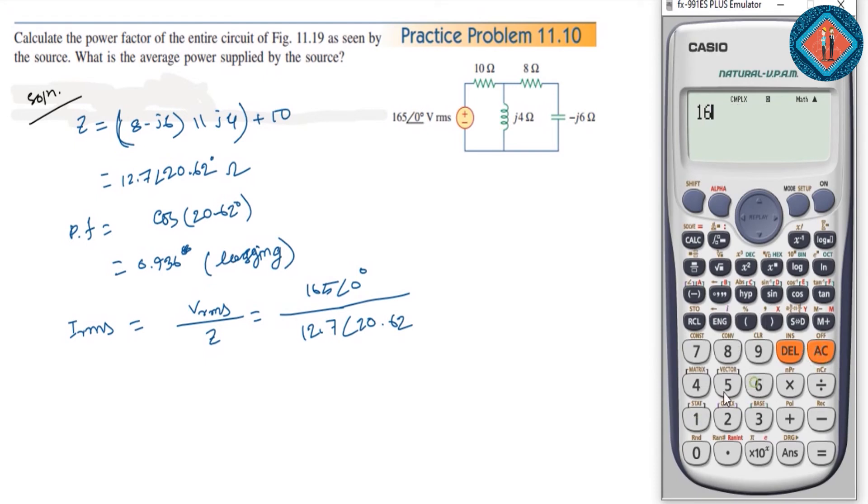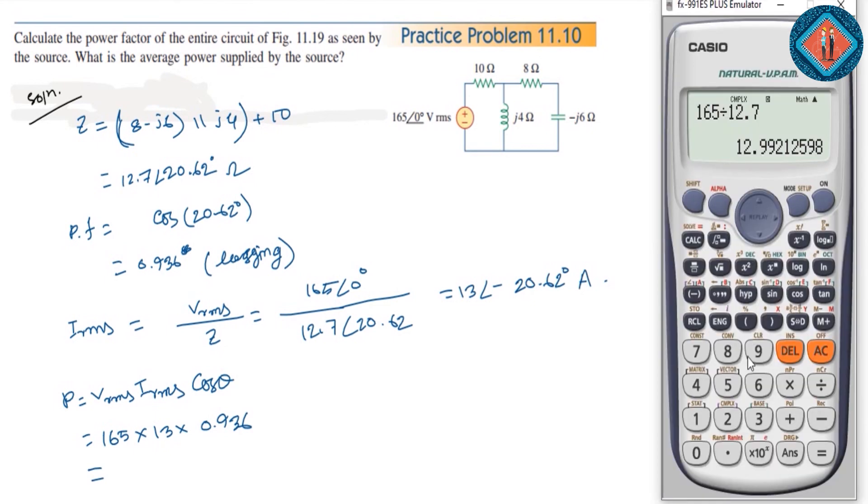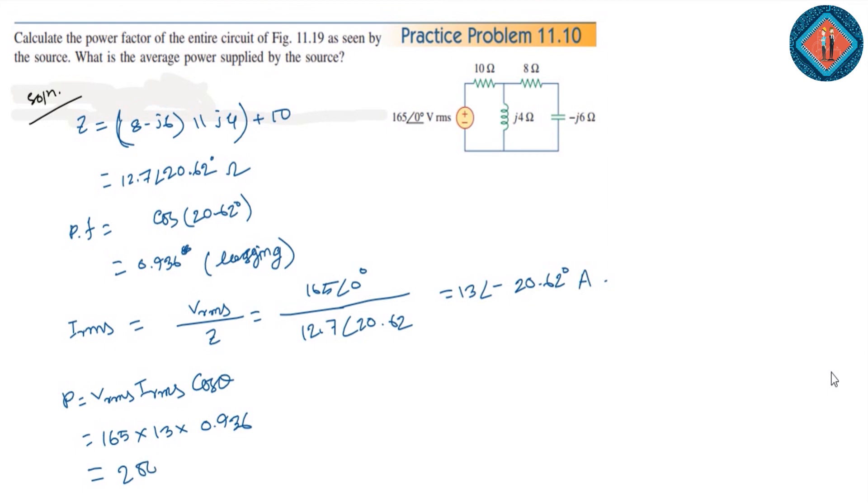Calculating the average power: P equals V_rms times I_rms times cos theta. That's 165 times 10 times 0.936, which gives us approximately 2.008 kilowatts or 2008 watts. This is our answer.